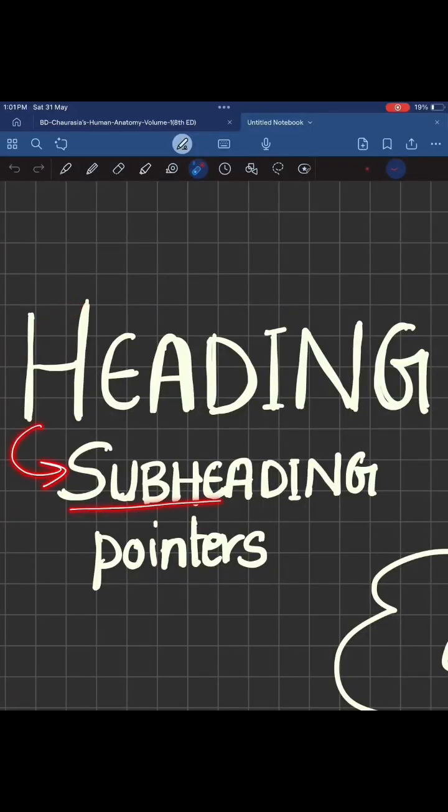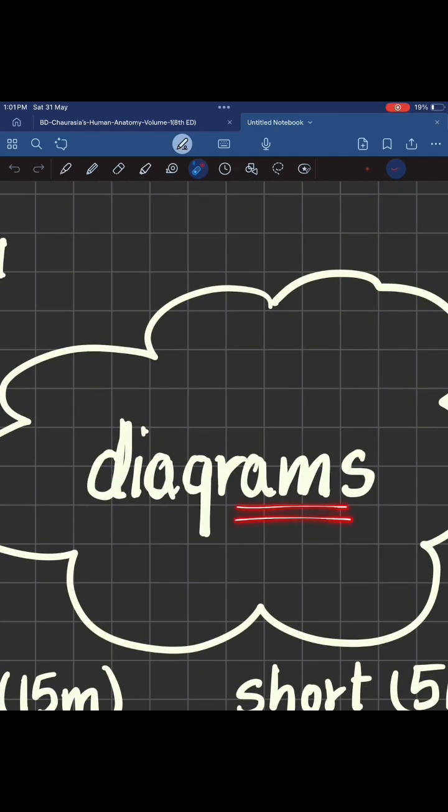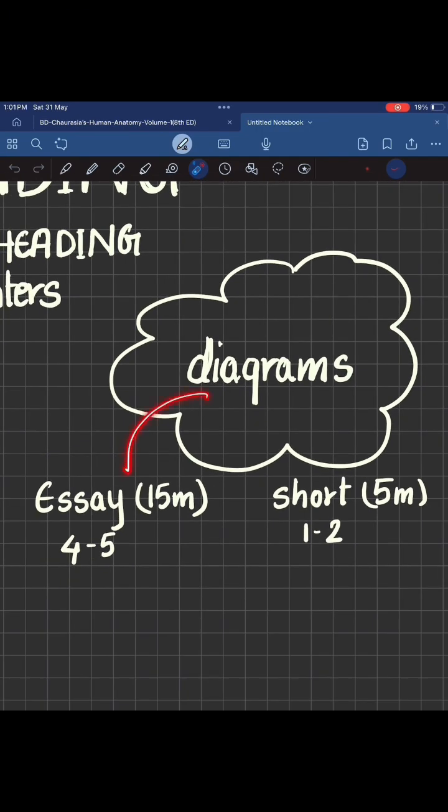The basic outline is headings which will have the subheadings and pointers, depending on how much you remember. One, two, or three points, and the soul of your paper which will be diagrams, which depends on the type of question.